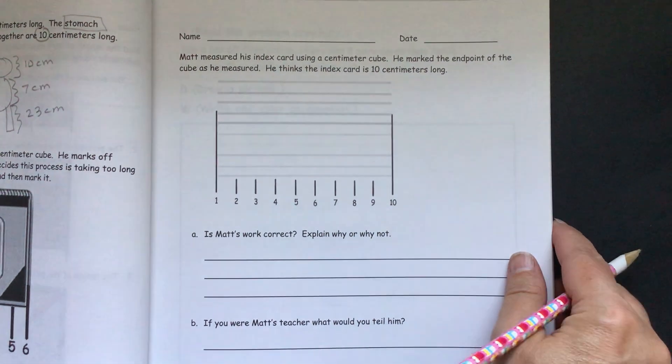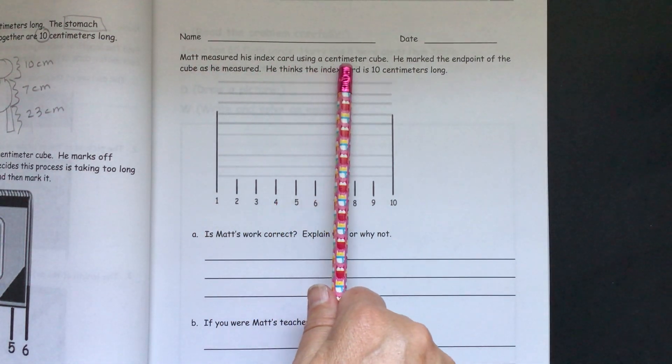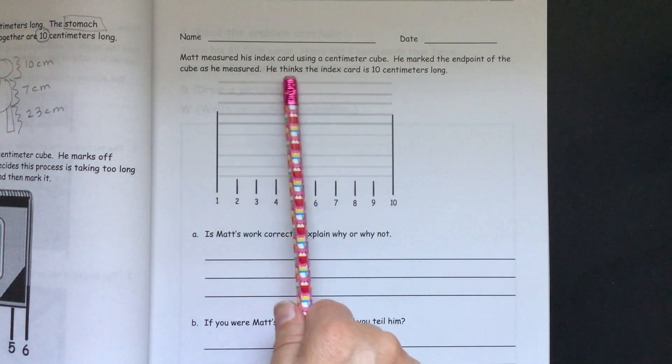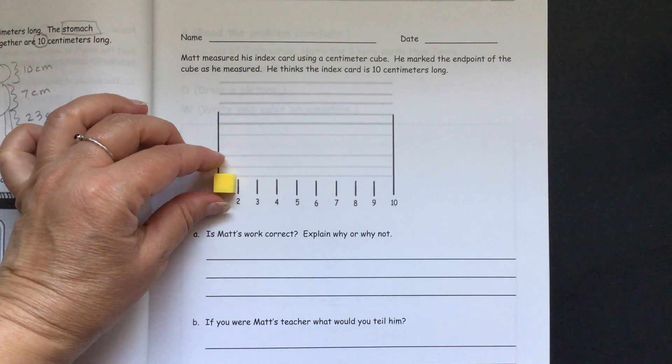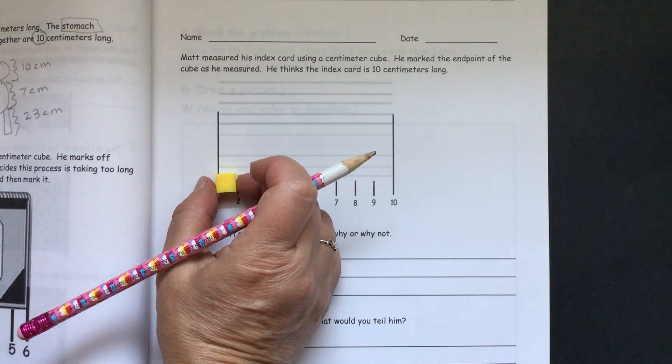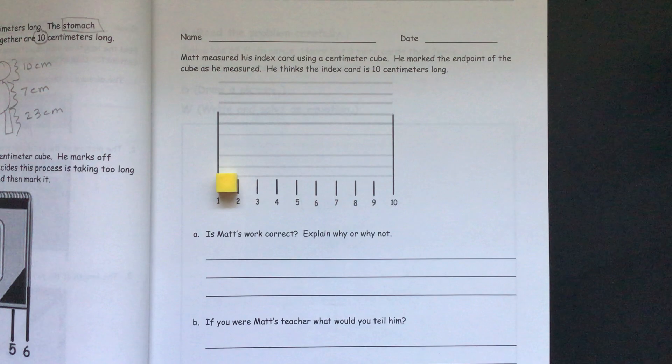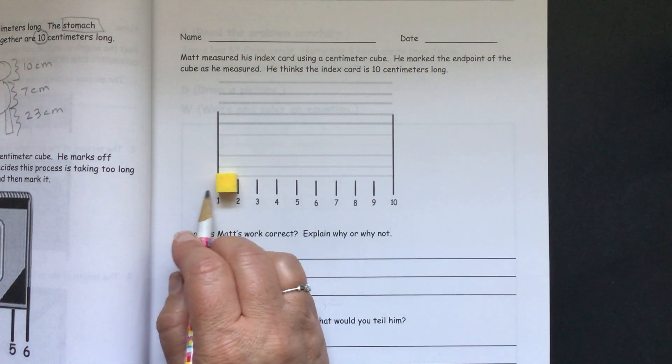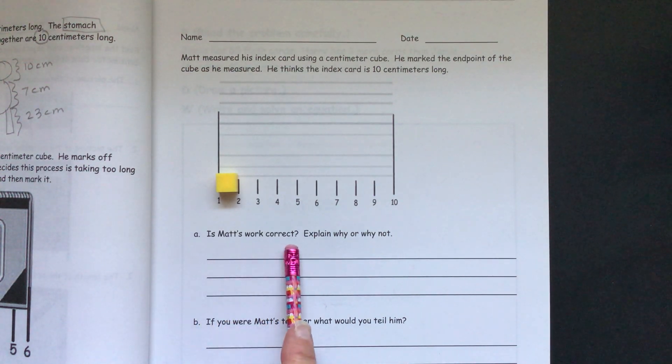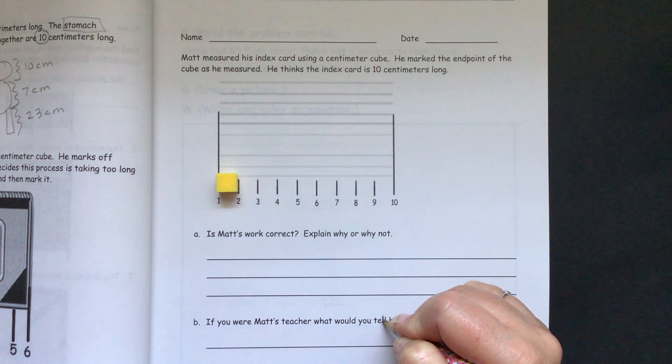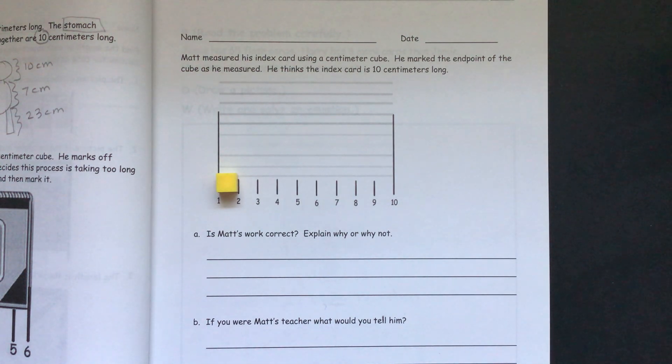Then our exit ticket. Matt measured his index card using a centimeter cube. He marked the end point of the cube as measured. He thinks the index card is 10 centimeters long. Well, this looks like a situation where you need to get your centimeter cube and make sure that he did it correctly. You have to make sure you mark. Well, did, should he have started with one here? Is that really one centimeter over here? So it asks you, is Matt's work correct? Explain why or why not? And B, if you were Matt's teacher, what would you tell him? Oh, looks like they have a typo here. So this really should be an L. So let's just change that into an L. What would you tell him? So I hope this helped.